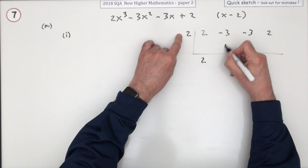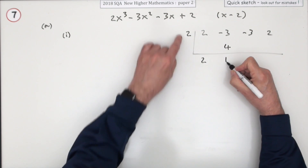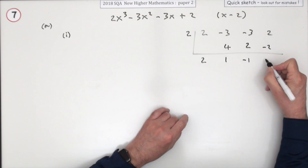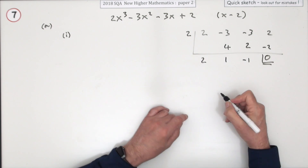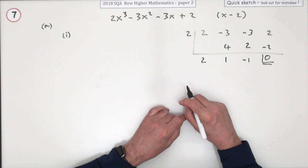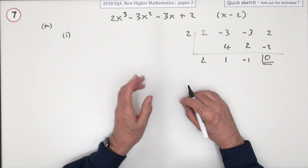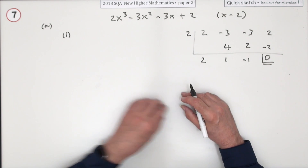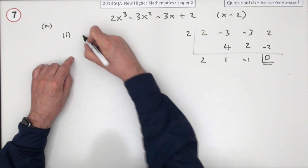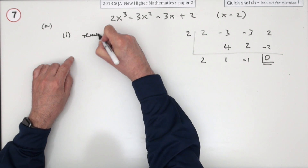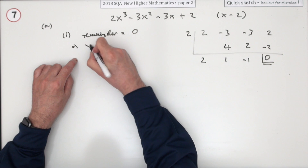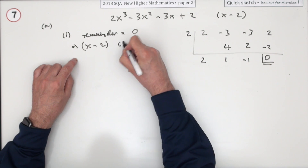It drops down to 2, comes up to 4, add it down to 1, multiply up 2, add it down negative 1, multiply up negative 2 — so the remainder is 0. But don't just box off that 0 and leave it, because you only get one mark out of the 2. You have to say what that means: the remainder equals 0, which means that x minus 2 is a factor.